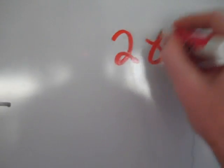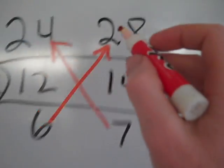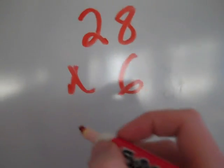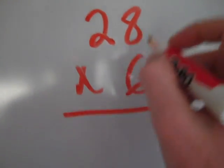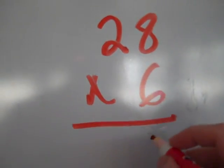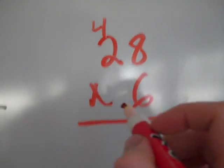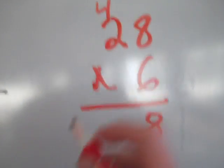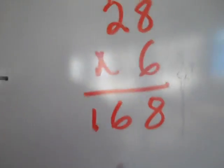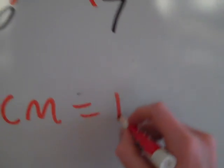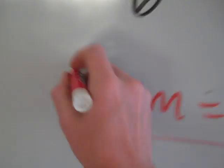So I'm going to do 28 times 6, which is what I got right here. 24 times 7 should be the same number, but I picked this one. 6 times 8 is 48, and I'll carry my 4. 6 times 2 is 12, plus 4 is 16. So it's 168. LCM equals 168.